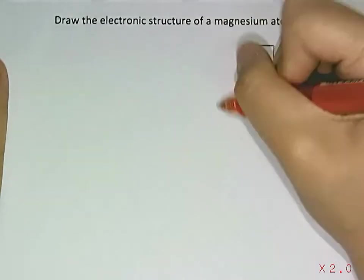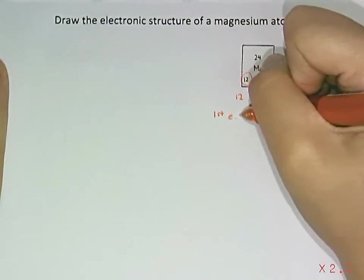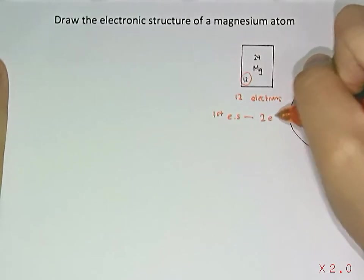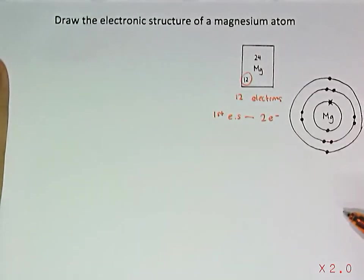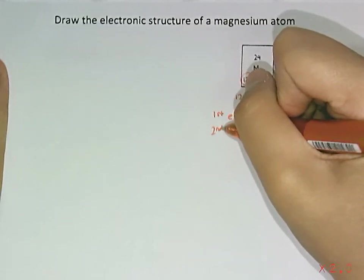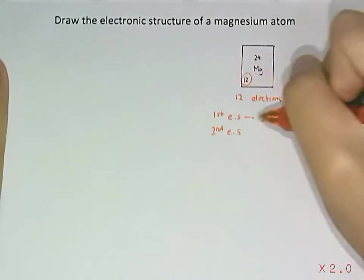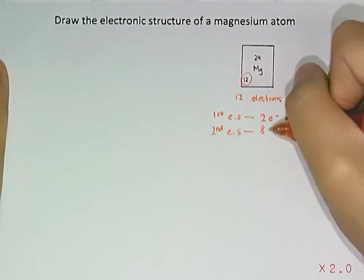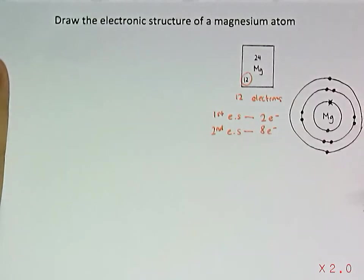For the first electron shell, we're going to put in 2 electrons. And then, for the second electron shell, we can put in 8, since we have 12. And 12 minus 2 equals 10.